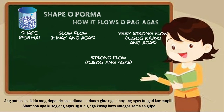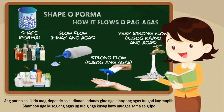For shape, liquids take the shape of their container. For how it flows, we have slow flow, strong flow, and very strong flow. Slow flow — glue is an example because it is sticky. Strong flow — shampoo, which is not as sticky as glue but can make bubbles and foam in your hair. Very strong flow — water from a faucet flows very, very fast.